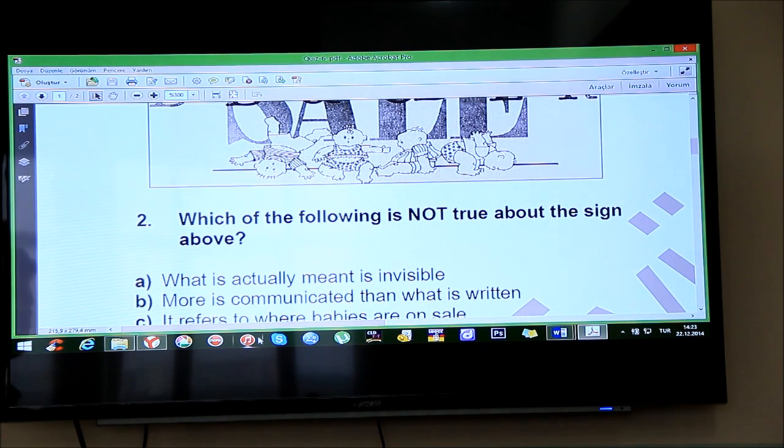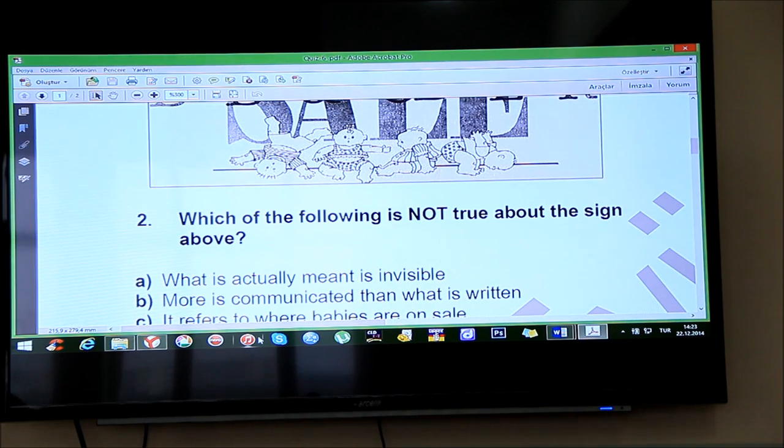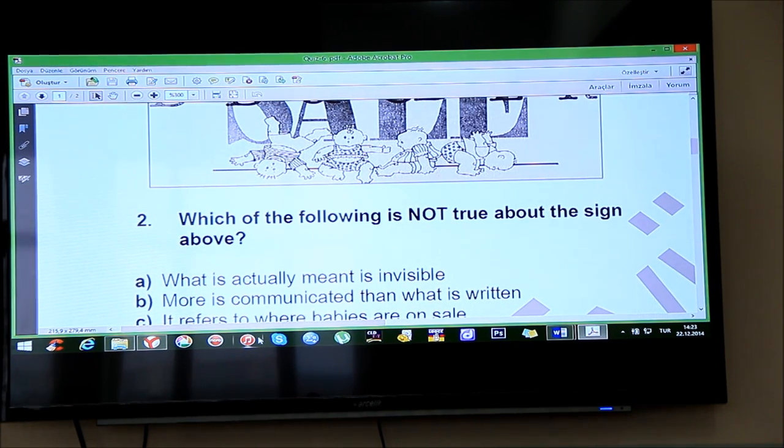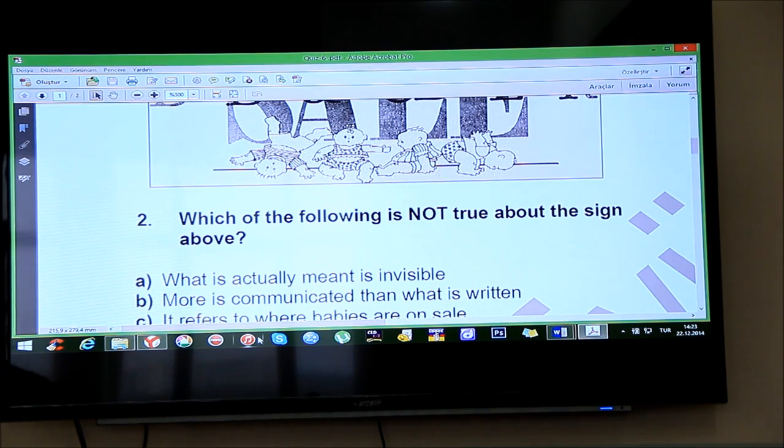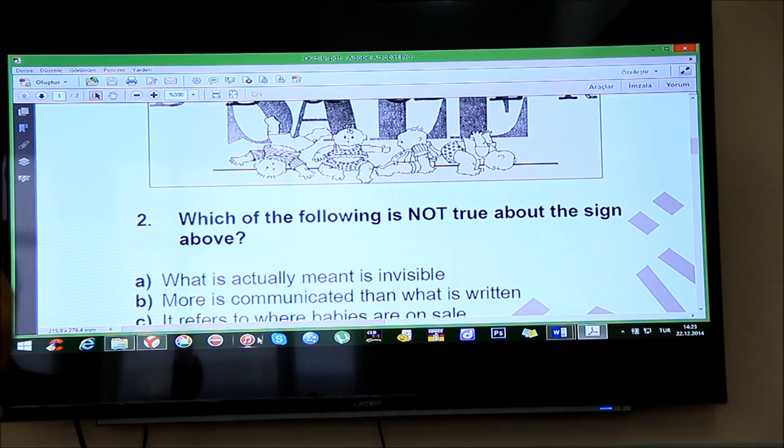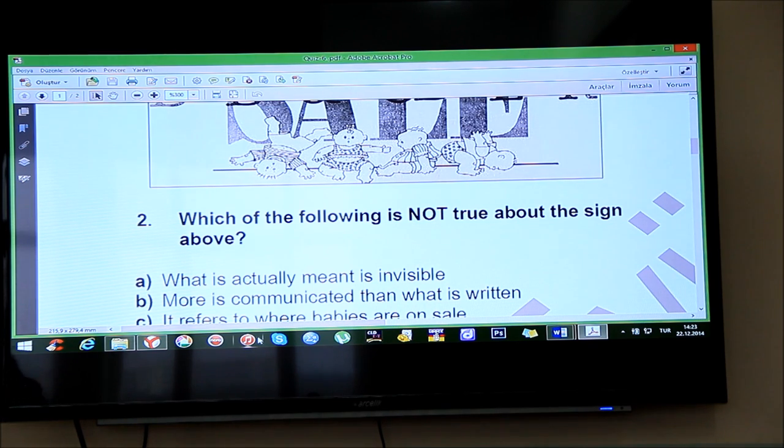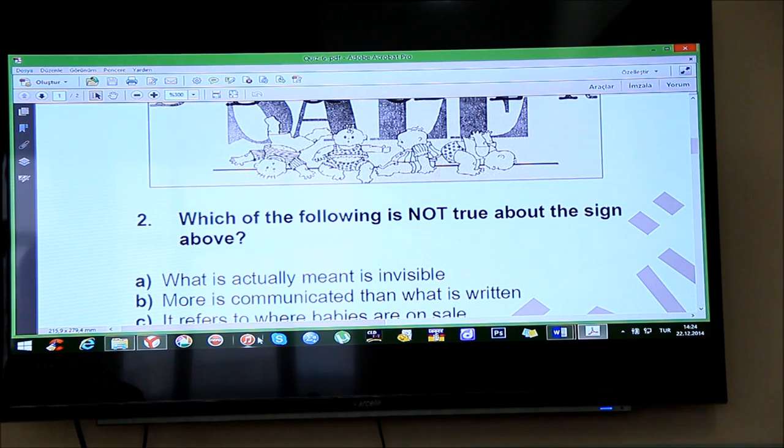which of the following is not true about the sign above? What is actually meant is invisible. Right? What is meant by the sign is invisible. It is not written. What is meant by the sign? Baby clothes. Baby clothes. It means we sell baby clothes. And these clothes are on sale, on discount. There is discount on baby clothes. Right? Okay? But it doesn't say. Just we assume. The person who writes this sign assumes. Okay? Presupposes that the others, the seers, the people who will see the sign will understand that we're selling baby clothes and they are on sale. Alright?